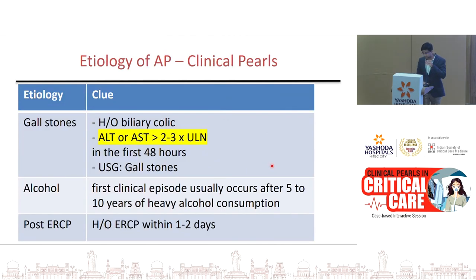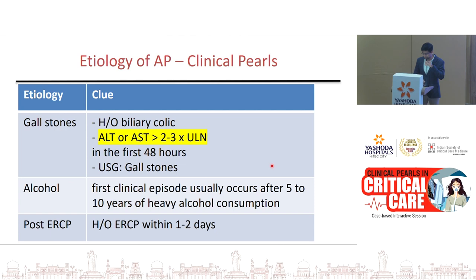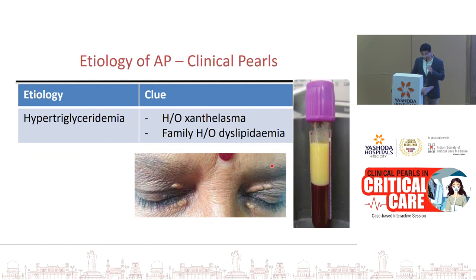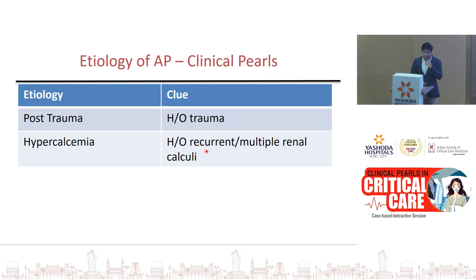To diagnose etiology: for gallstones, history of biliary colic or elevation of ALT or AST at least two to three times in the first two to three days gives more than 90% specificity for biliary etiology. For alcohol: a few months of intake usually don't precipitate pancreatitis — it typically occurs after five or more years of heavy consumption. For hypertriglyceridemia: look for xanthelasma, family history of dyslipidemia, or a white lipid layer when drawing blood. For hypercalcemia: any patient with recurrent renal stones should be evaluated.